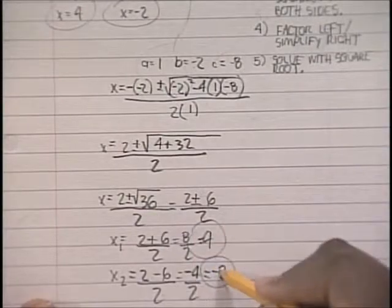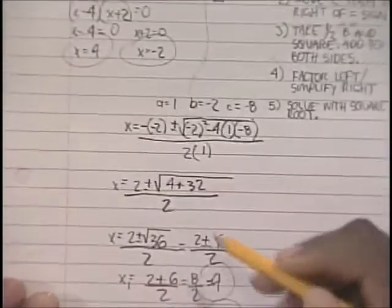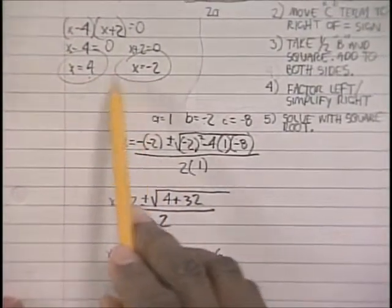You get the same answer: 4, negative 2. And over here you got 4, negative 2.